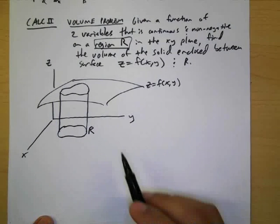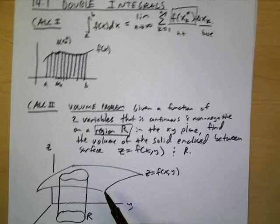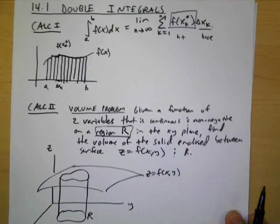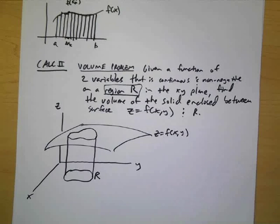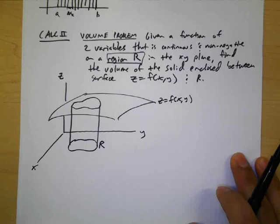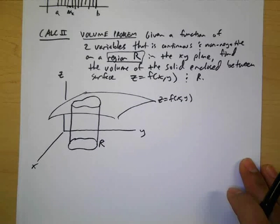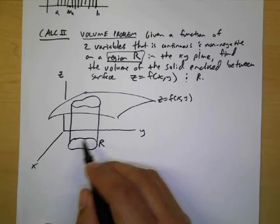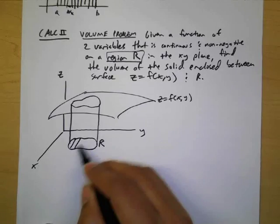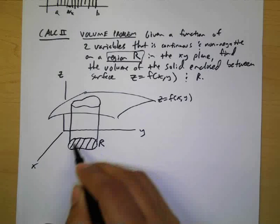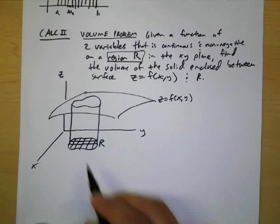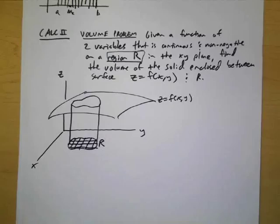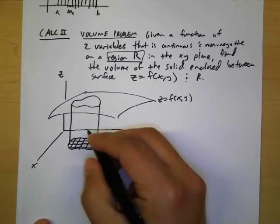And now the process for finding the volume is going to be exactly like what we did here with the Riemann sum except instead of doing the Riemann sum of several little areas we're going to do the Riemann sum of several little volumes. And so what we'll do is we'll subdivide R into rectangles and if we take let's say the center of one of these rectangles and map that point up here.